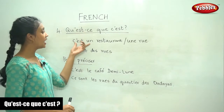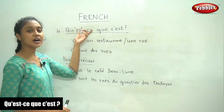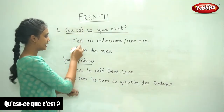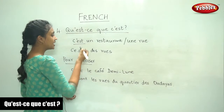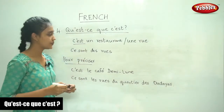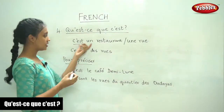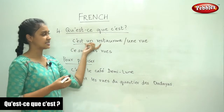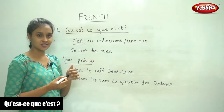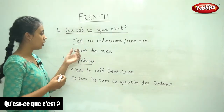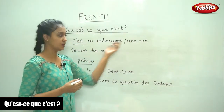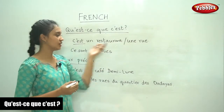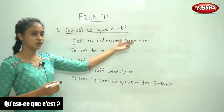We are going to see how to answer this question. I told you it begins with 'C'est.' So, 'C'est un restaurant' — it is a restaurant. Or 'C'est une rue' — it is a street.